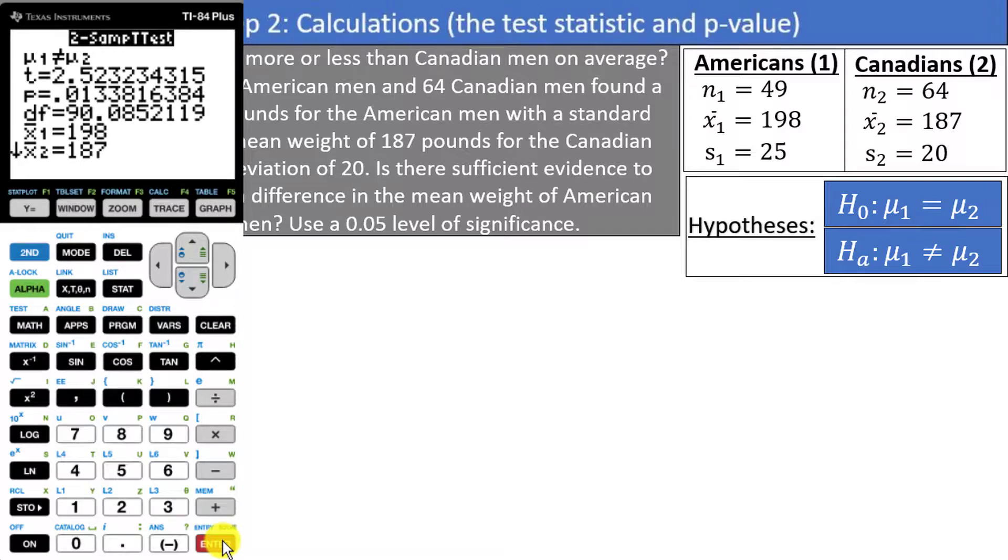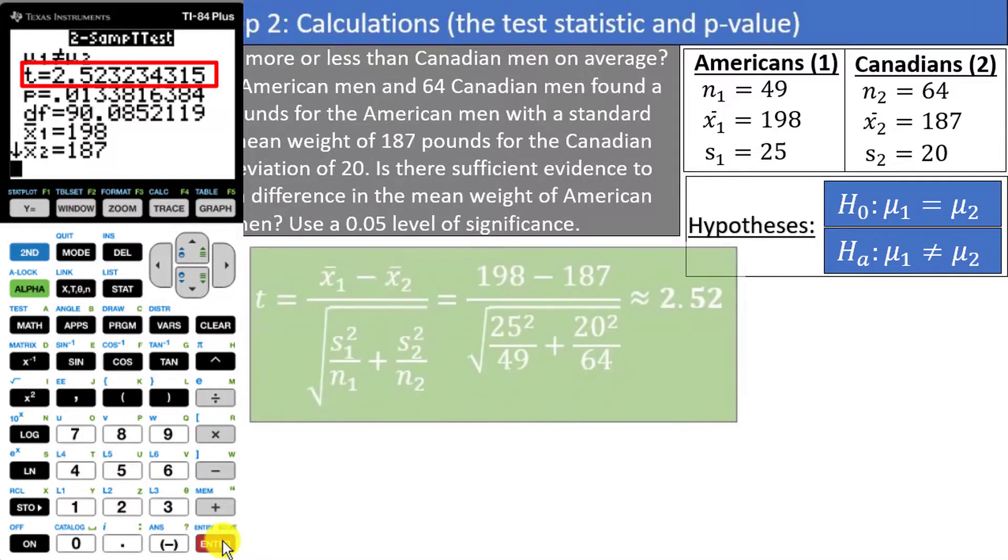The test statistic is 2.52, and the p-value is 0.0134. You could have calculated the test statistic of 2.52 by hand by using this formula, which we looked at earlier. But most people agree that using the calculator function is a little bit easier.